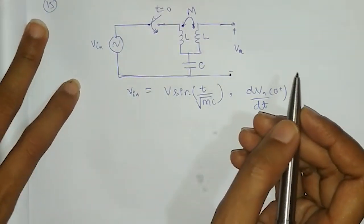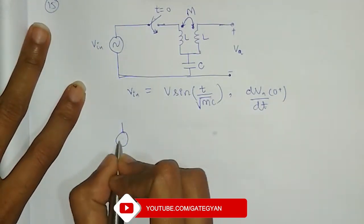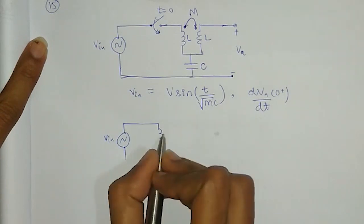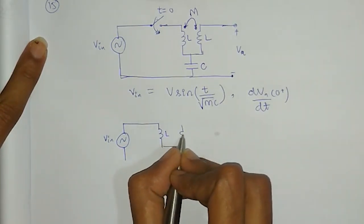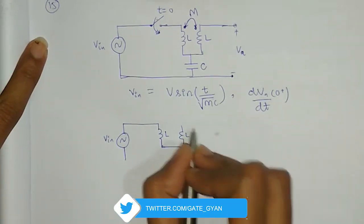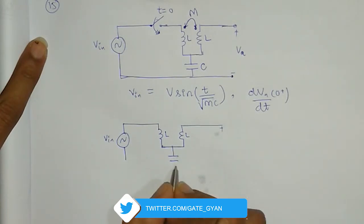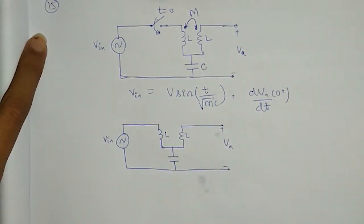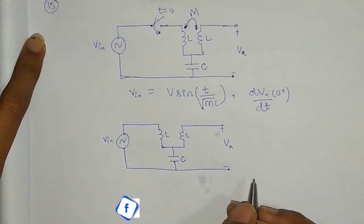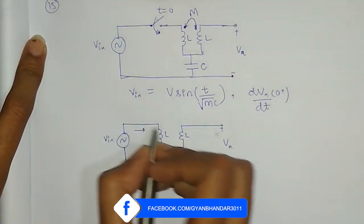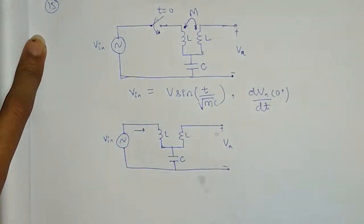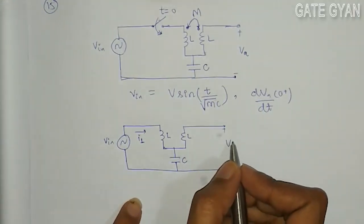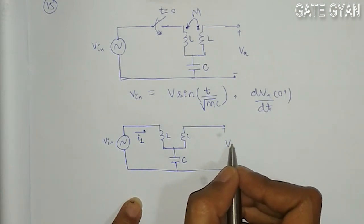First, I will draw the circuit at T equal to 0 plus. The circuit will look like this — we have the inductance L and the capacitance C with value VA across it. The current flowing through this branch at T equal to 0 plus is I1, and as this portion is open-circuited, I2 will be 0.